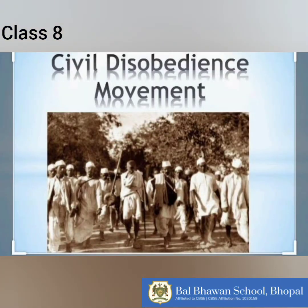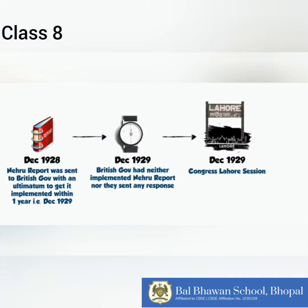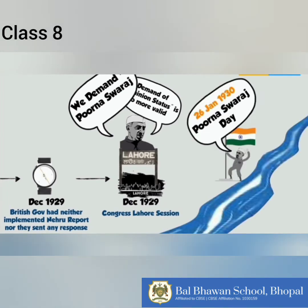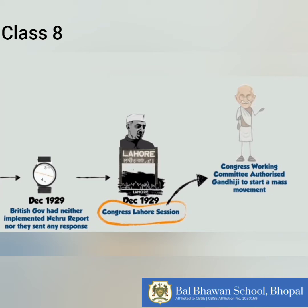The Indian National Congress emerged as the representative of all-India sentiments and decided to steer the national struggle in another direction. On December 31st, 1929, the Indian National Congress in its annual session at Lahore passed the resolution of Purna Swaraj, or complete independence. This session was presided over by Jawaharlal Nehru. In this session, the tricolor was hoisted and Indians were asked to celebrate January 26th, 1930 as Independence Day. Gandhi ji was placed in charge of the civil disobedience movement by the Congress Working Committee.